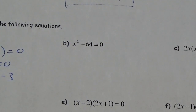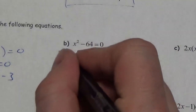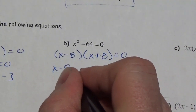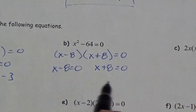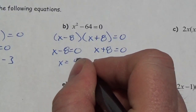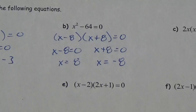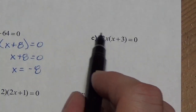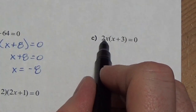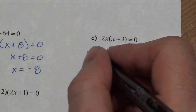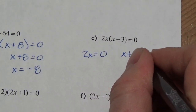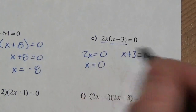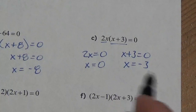There are a couple of ways to do x² - 64 = 0, but I'm going to factor it. It's a difference of squares, so it factors as (x - 8)(x + 8) = 0, giving solutions x = 8 or x = -8. Now here's a nice one — it's already in factored form: 2x(x + 3). I can even see it as 2 times x times (x + 3). Setting each factor to zero: 2x = 0 gives x = 0, and x + 3 = 0 gives x = -3.